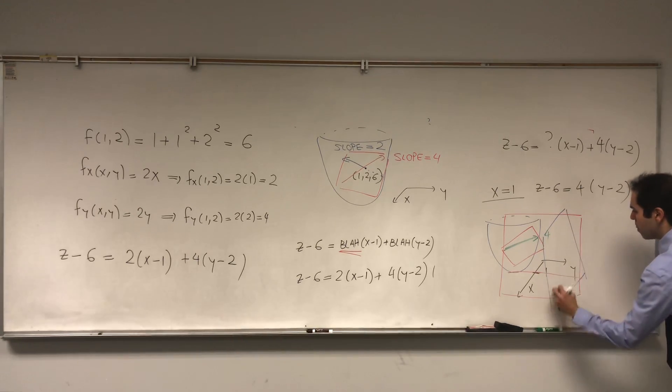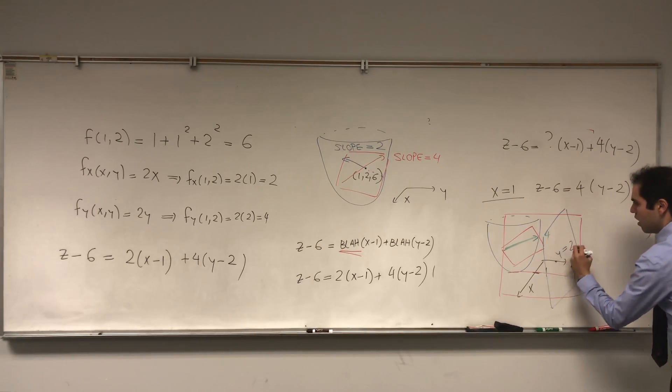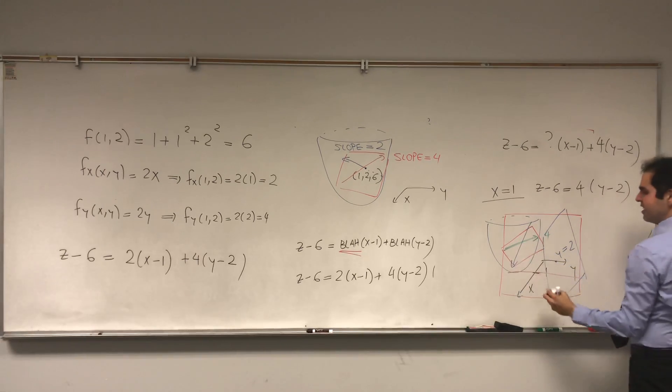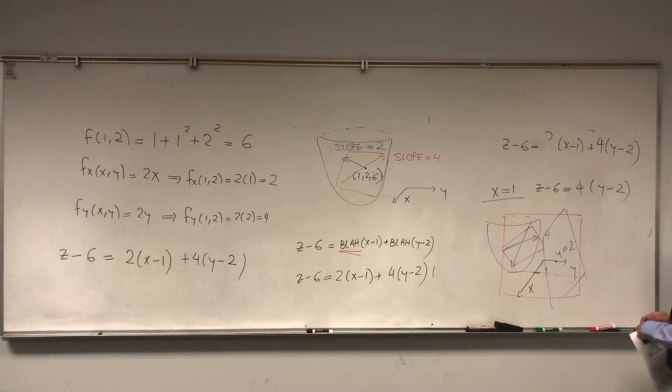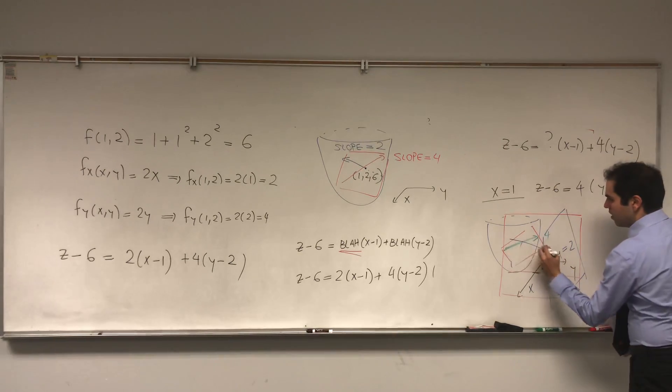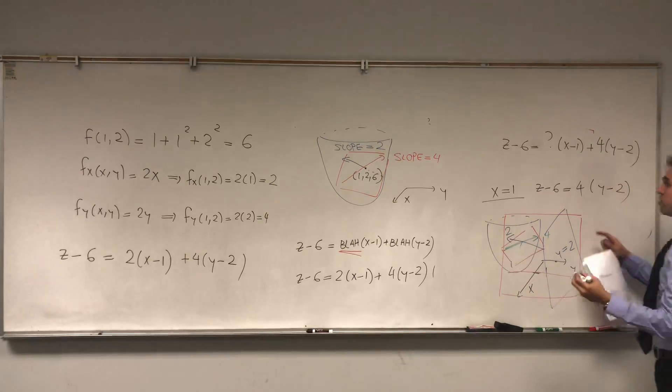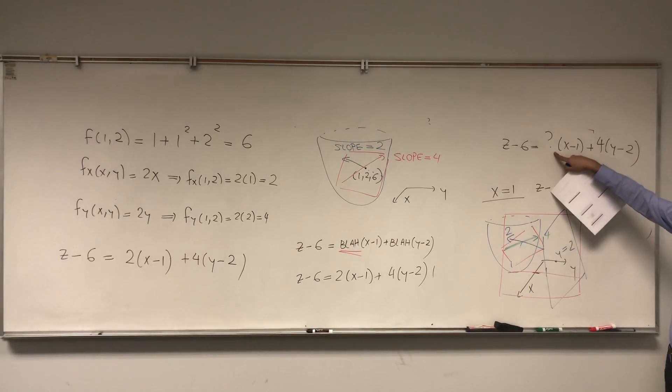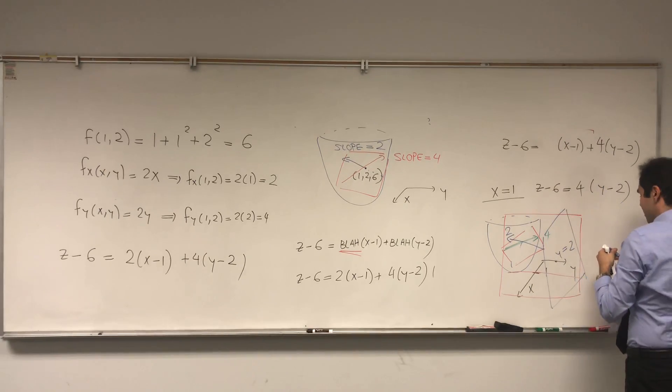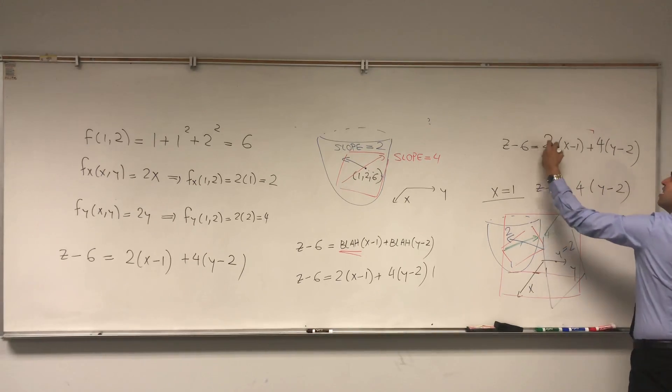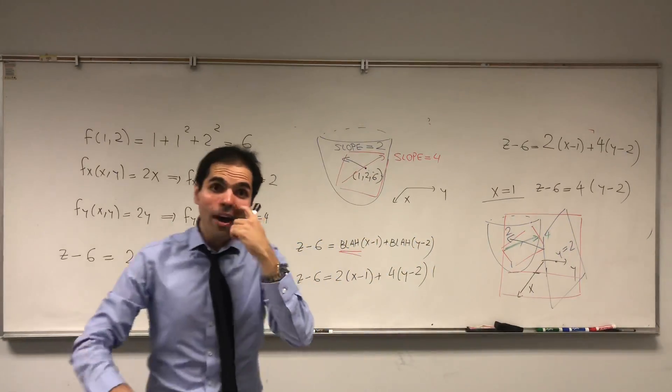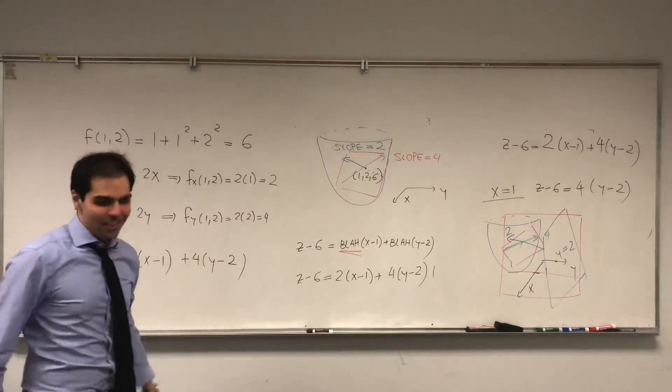And similarly if you slice this in the other direction, like in the plane y = 2, then the slice of this becomes a line in this direction, or I guess more precisely in this direction, whose slope is 2. And this is why we get that the first coefficient here is 2 as well. So this is another interpretation of why we have this equation of the tangent plane.